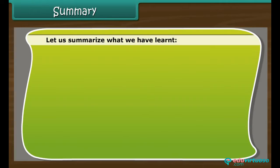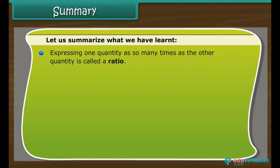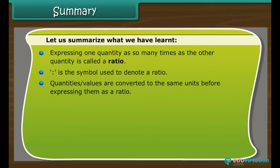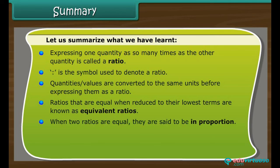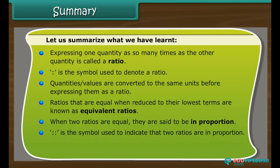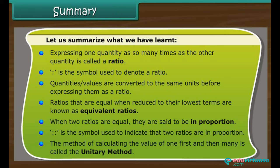Summary. Expressing one quantity as so many times the other is called a ratio. Colon is the symbol used to denote a ratio. Quantities are converted to the same units before expressing them as a ratio. Ratios equal when reduced to lowest terms are equivalent ratios. When two ratios are equal, they are in proportion. The method of calculating the value of one first and then many is called the unitary method.